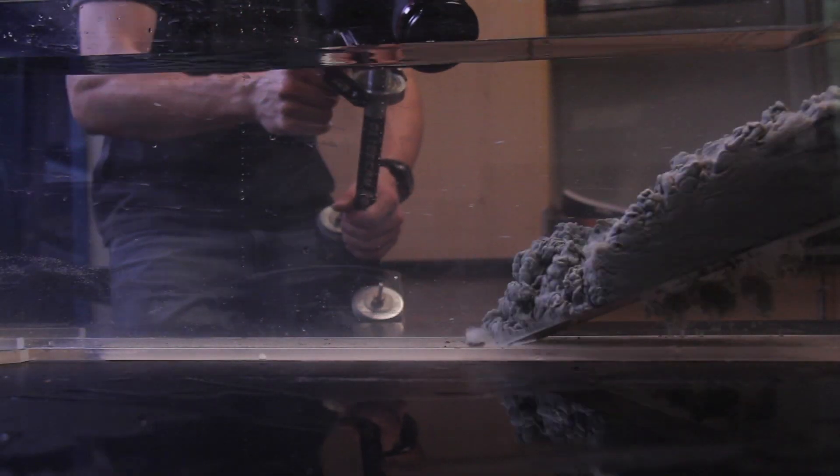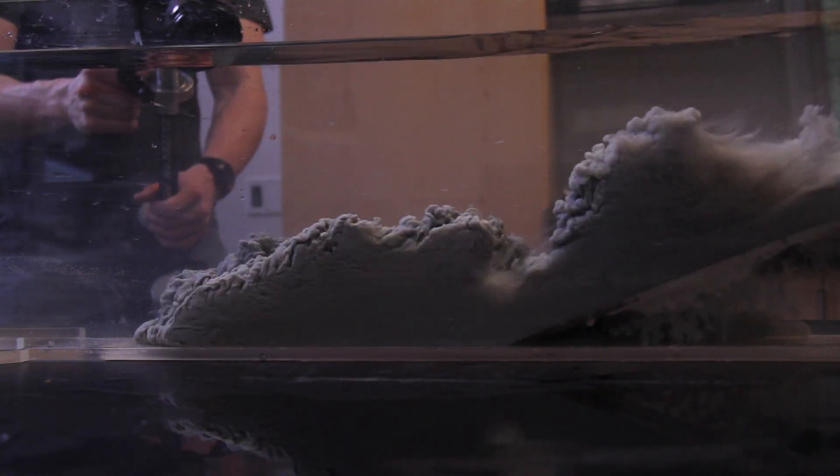Here's a turbidity current running again down the same slope. Again, you can see the anatomy of the turbidity current.